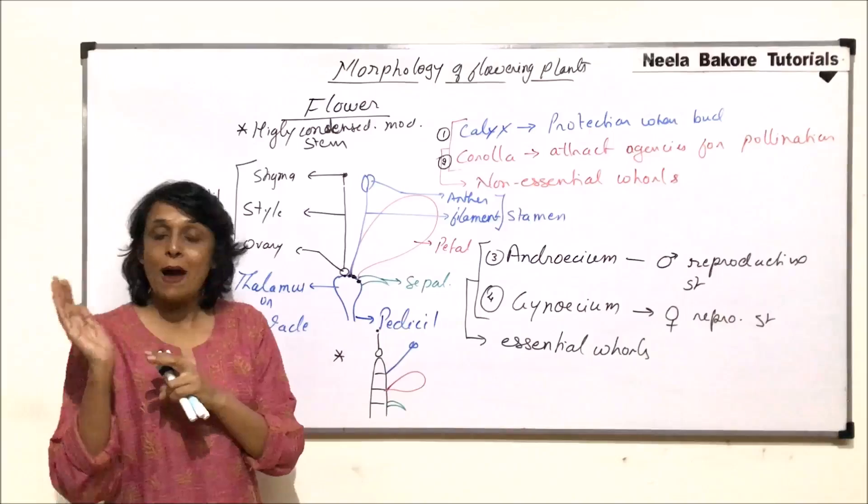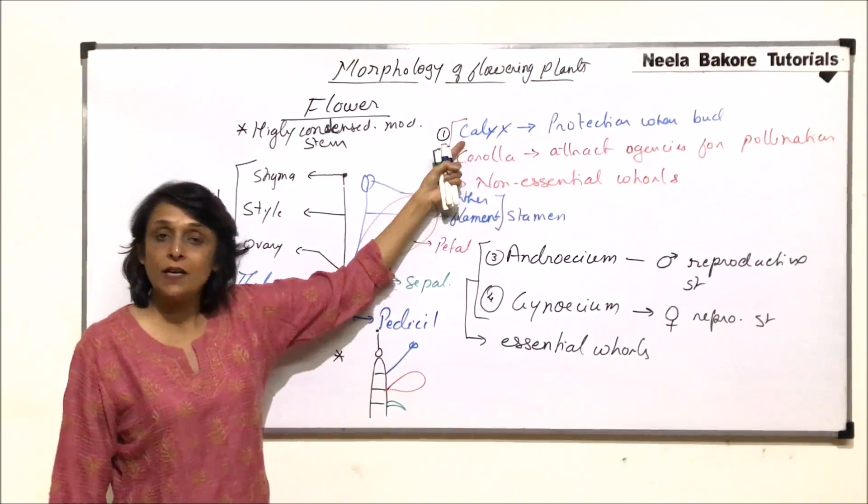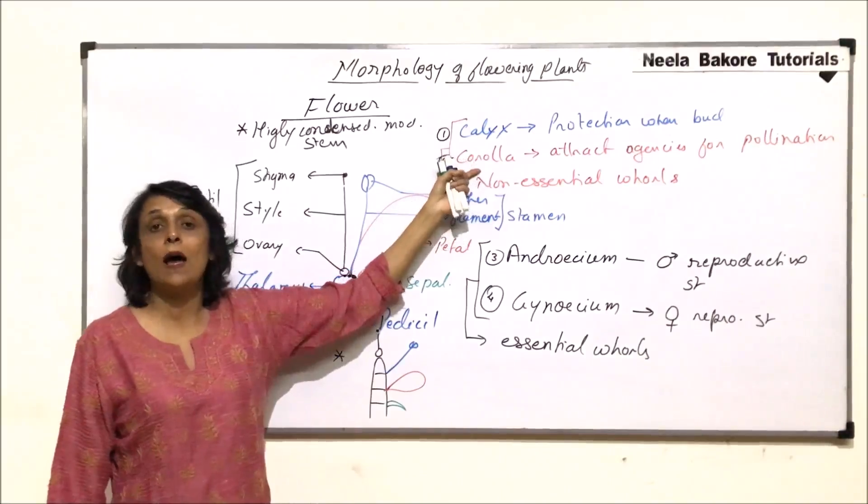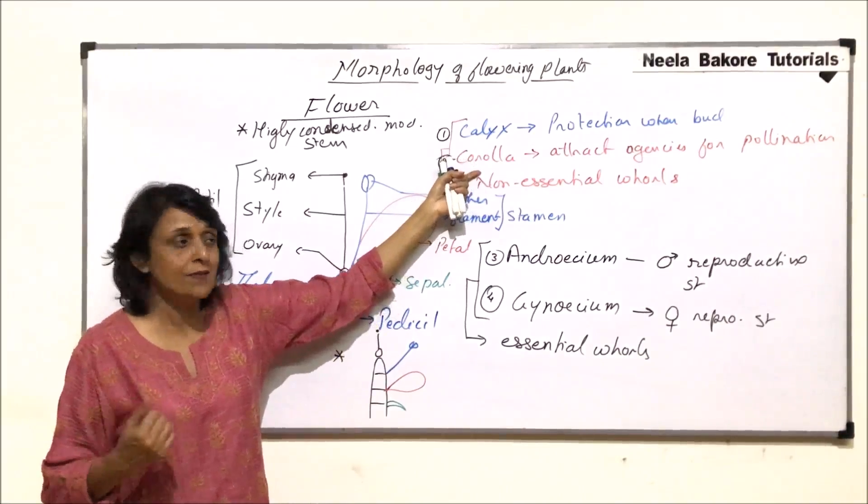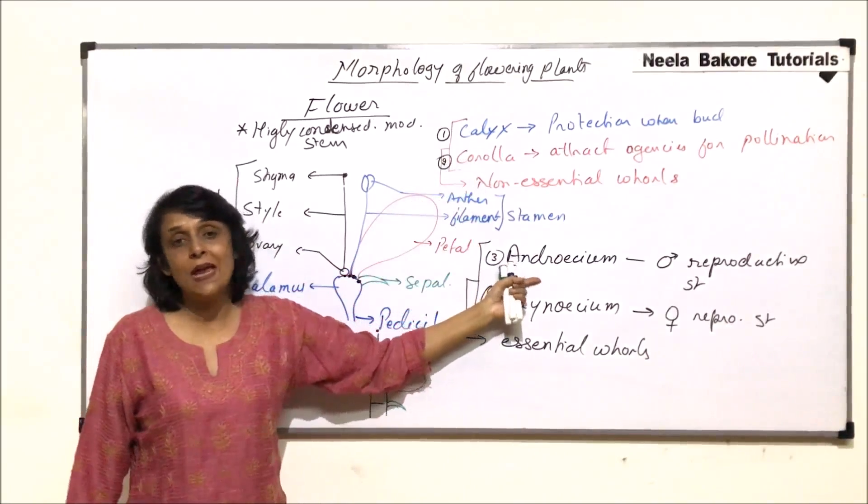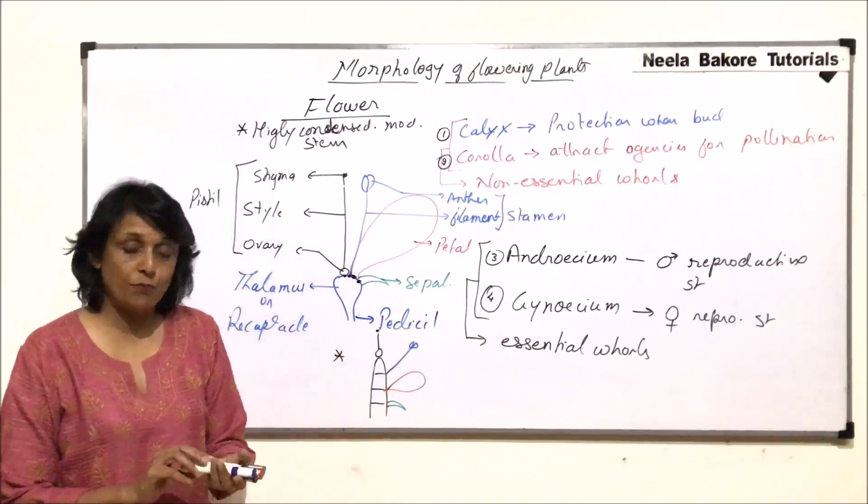Arrangement is from outside in. Outer is calyx, protective in function. Then corolla, to attract insects. Androecium, male reproductive. And gynoecium is the female reproductive.